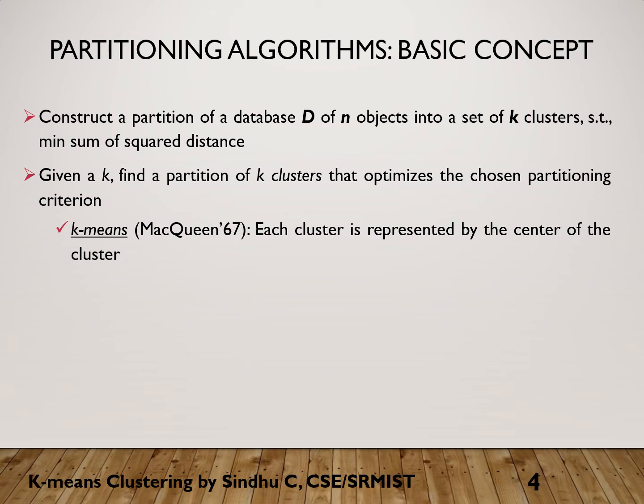The very first paper written on k-means was by McQueen in the year 1967, where each cluster is represented by the center of the cluster, which is basically the mean.